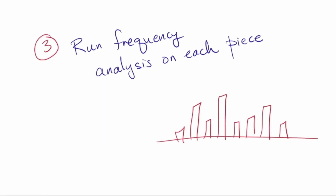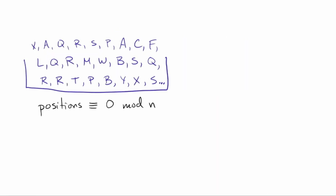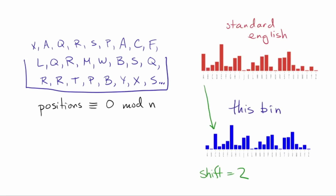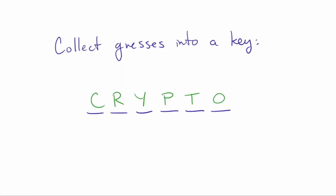Now on to step three: I run a frequency analysis on each bin. Let's just look at bin number one. Here are the standard English frequencies in red. I take the frequencies of all the letters in the bin and I see something like this in blue. This looks a lot like the English frequency just shifted by two. So I guess that the key letter is two, also known as C. Then I move on to bin number two and guess the next letter, etc. Finally, I have a guess for the key. I just have to give it a whirl and see if I can decrypt the cipher text using the key. Does the result look like a valid English message? Well, we hope so.